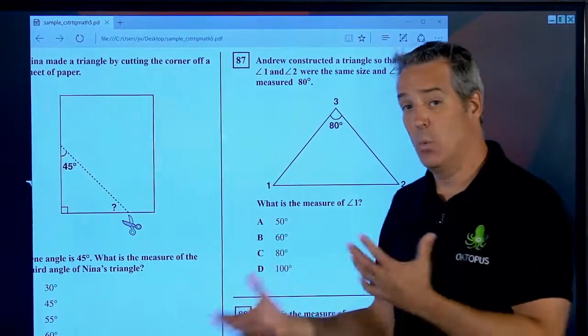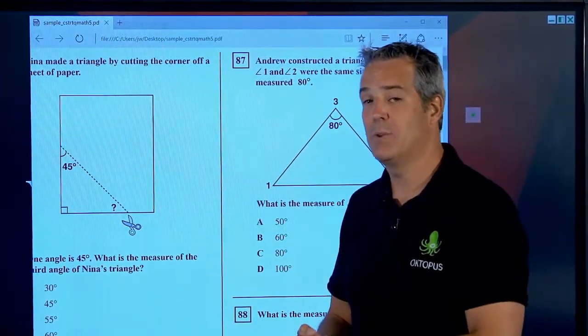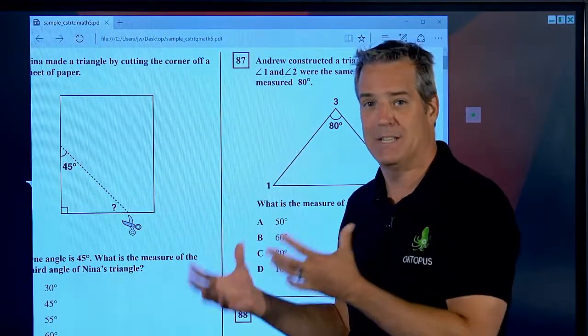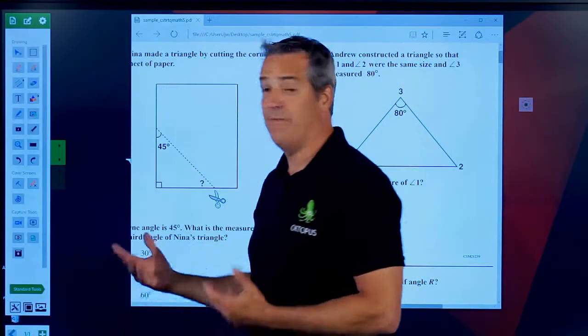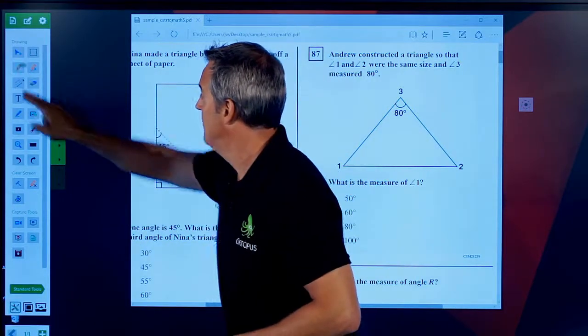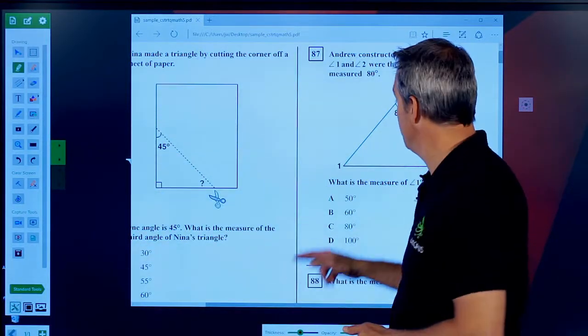But if we wanted to use this with the Octopus software, we could do it without actually bringing it in as a discrete object within the software. All we need to do now is find a tool that we might want to use. In this case, we're going to just use the pen tool.